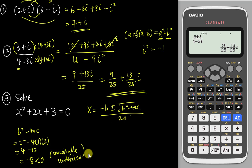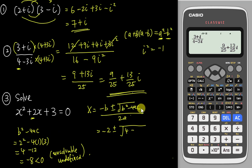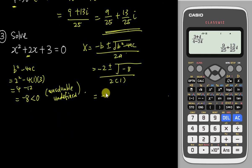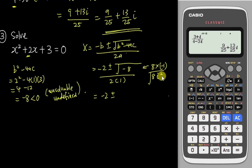But in complex numbers, this situation is no longer a problem — that's the whole purpose of complex numbers, to solve these unsolvable equations. So: negative b is negative 2, plus or minus square root of negative 8. We already computed 4ac = 4 times 1 times 3 = 12, so b squared minus 4ac = negative 8. Divided by 2a where a = 1. We separate negative 8 as 8 times negative 1, which equals 8i squared.